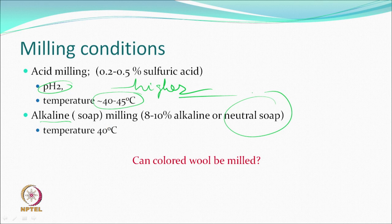Alkaline or soap milling provides a bit of lubrication. When using alkaline soap, the pH is not taken to 11 or 12–13, as wool would not be stable at such high pH. So either neutral or a mildly alkaline soap can be used. The same winch-type machine used for milling can also be used for scouring, or a similar machine.